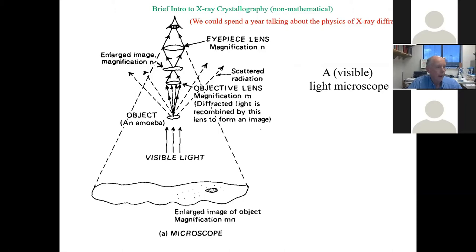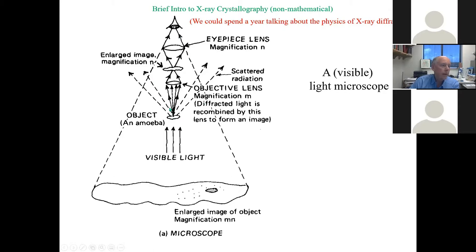I've stripped away almost all of the supporting structure, so let's take a look at the essential elements of a light microscope here. It'll help you understand x-ray crystallography. So if we have a little amoeba on the stage, we can illuminate it with visible light and that visible light is scattered by the amoeba and goes off in multiple directions — different two-theta angles if you know something about diffraction.